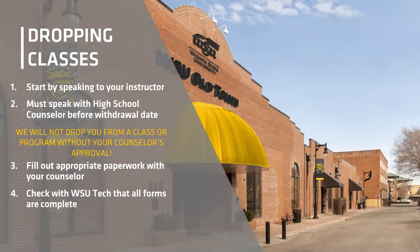Before the withdrawal date listed in your syllabus, talk to your high school counselor. WSU Tech will not drop you from a class or program without your counselor's approval. We want to make sure dropping a class won't affect your high school graduation. Also, some of our classes are progressive — if you want to drop one early class, you may have to drop the entire semester. After you've talked to your counselor, they know how to send the paperwork to drop you. Fill out the appropriate paperwork and double-check that everything is complete with both WSU Tech and your high school.